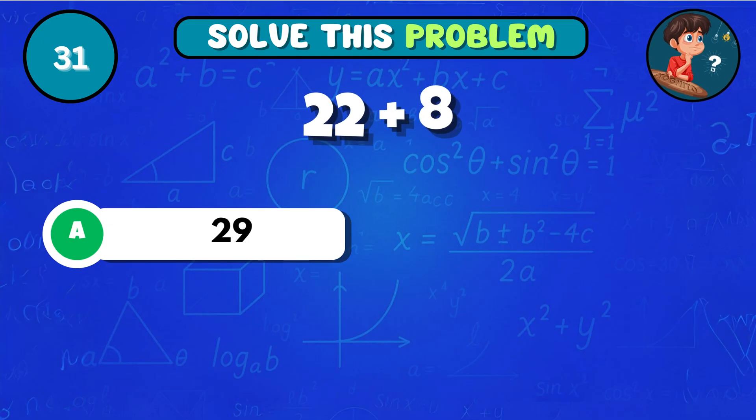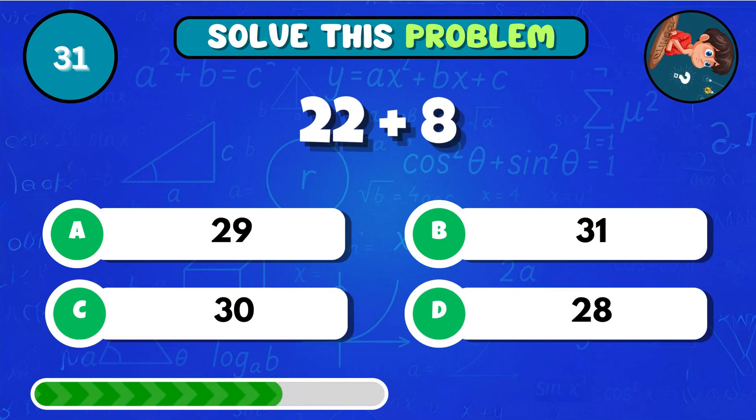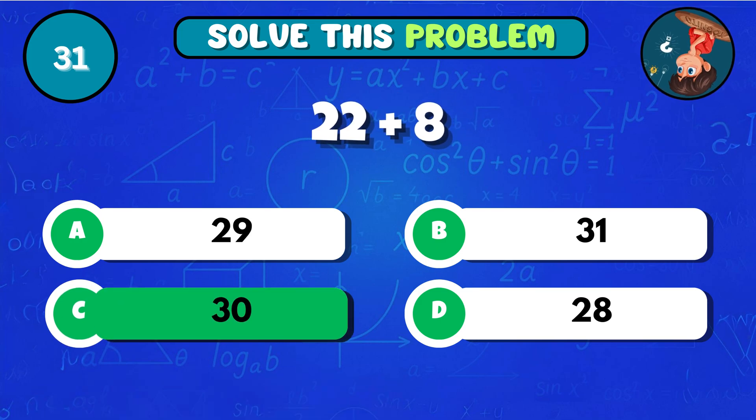If you take 22 and add 8, what's the result? That's C 30!